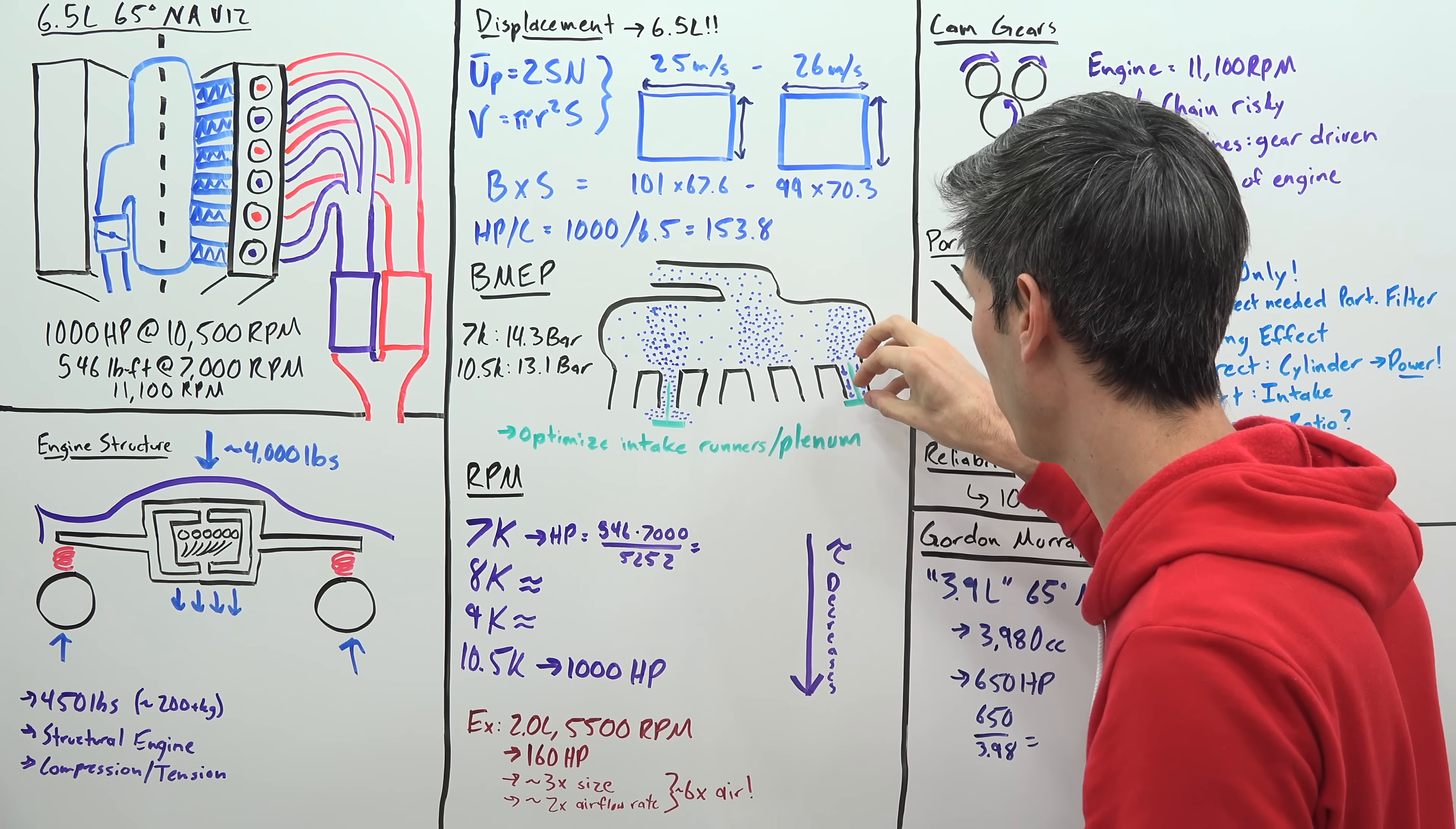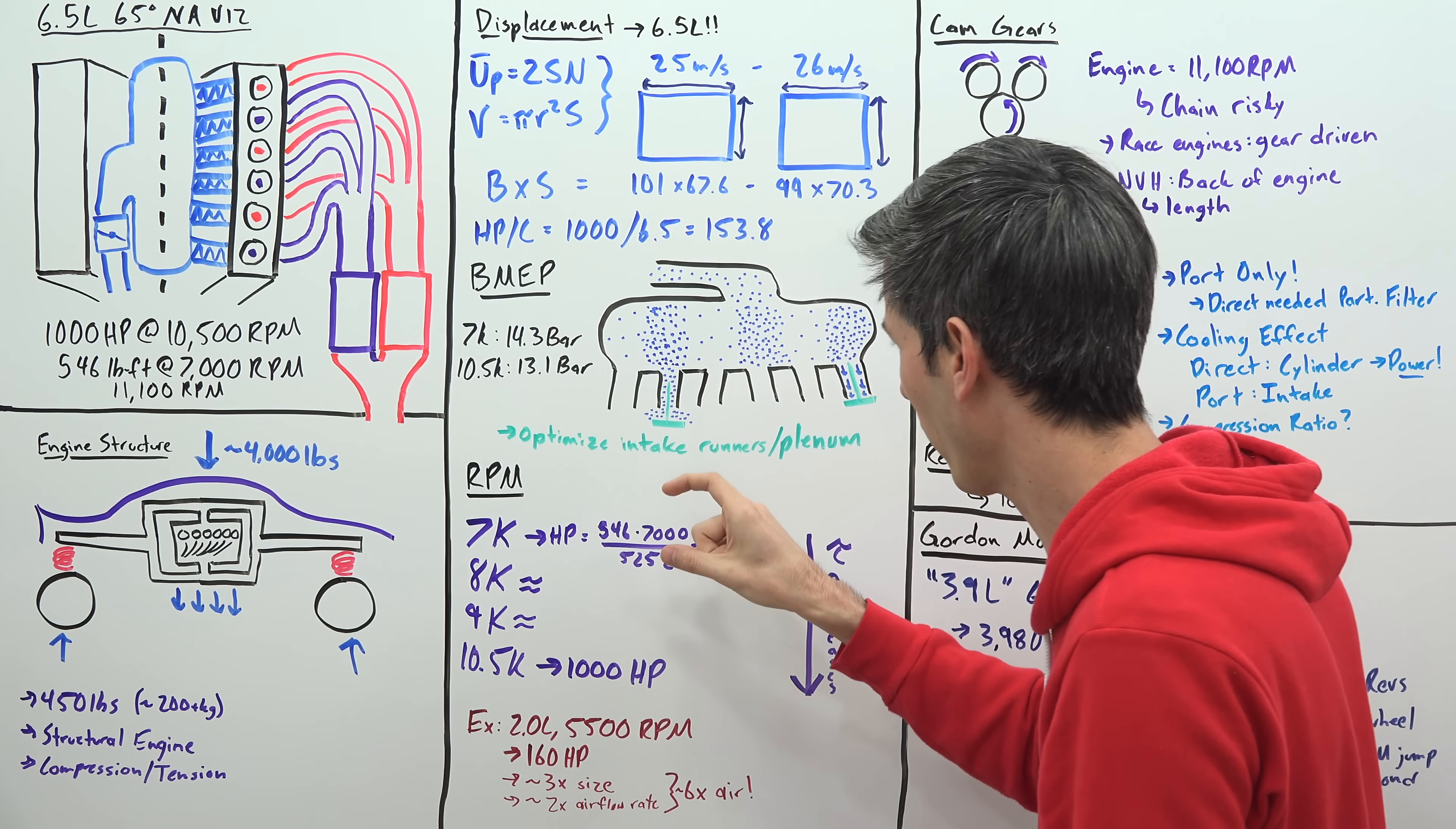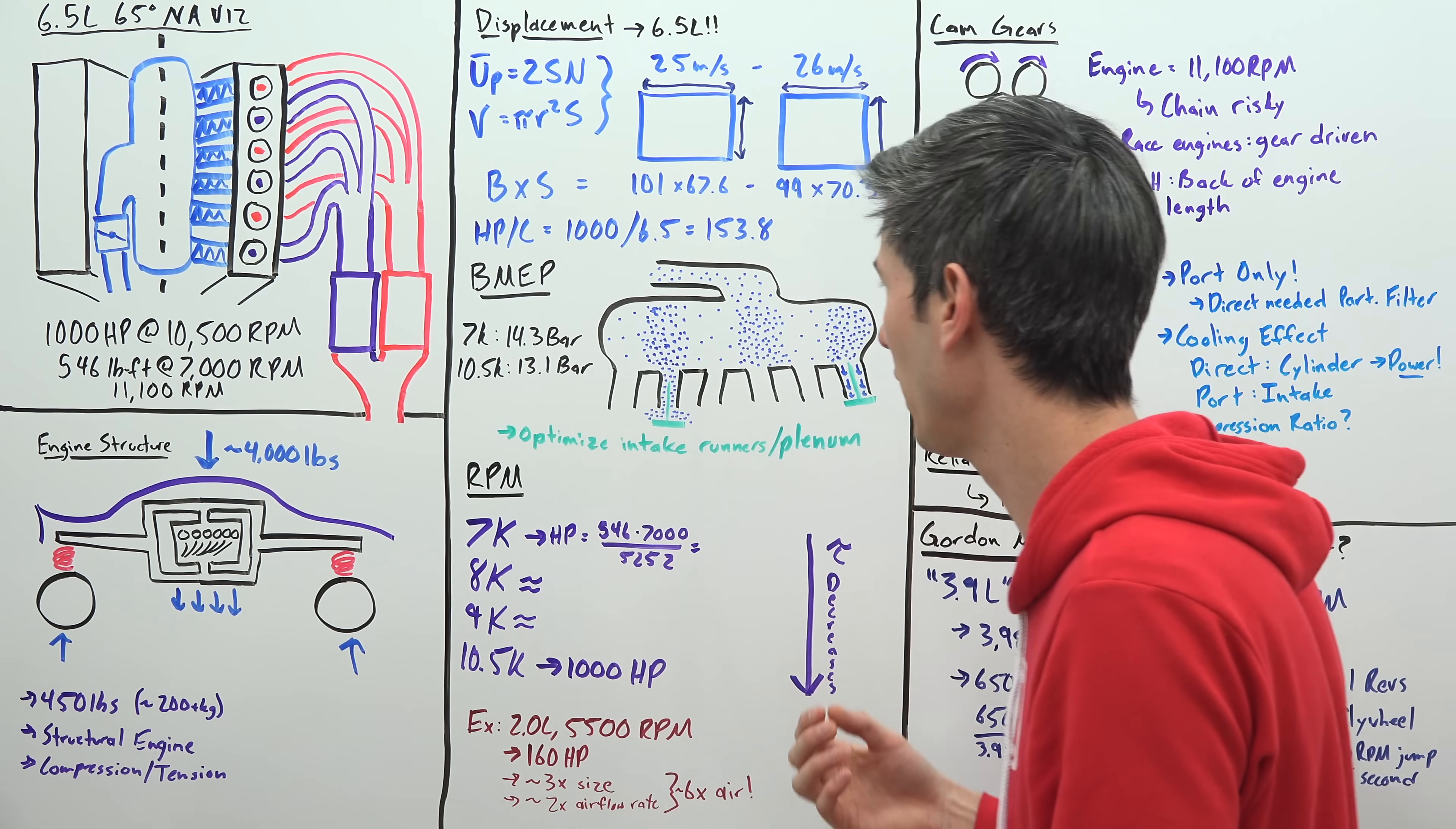So you create that high pressure region and that high pressure region starts bouncing around in this intake manifold and you want to time that so that high pressure region then passes over and works perfectly with a cylinder that is just opening its intake valve. So you have that high pressure occur right when the intake valve opens, you force in a little bit extra air within that cylinder and you're able to make more torque per liter.